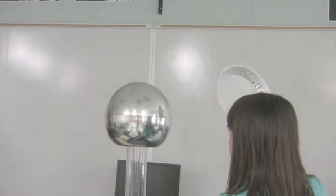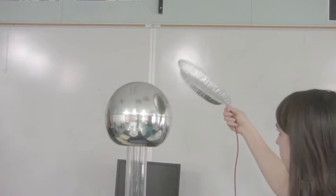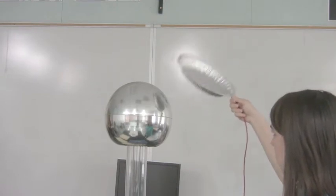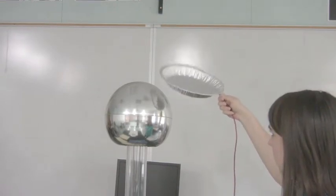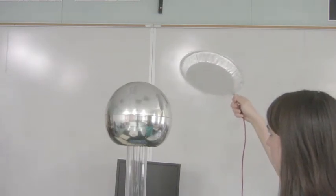This is a Van de Graaff Generator. Its whole purpose is to make this big metal sphere be very, very charged while the base of it, which this Piotin is connected to, stays relatively neutral.